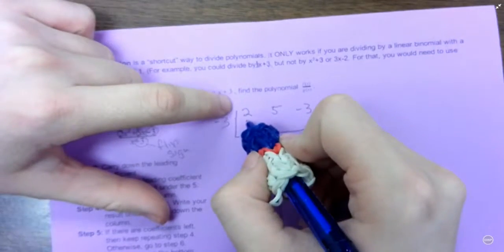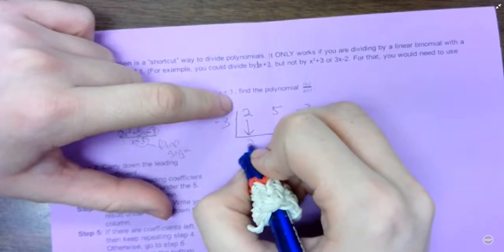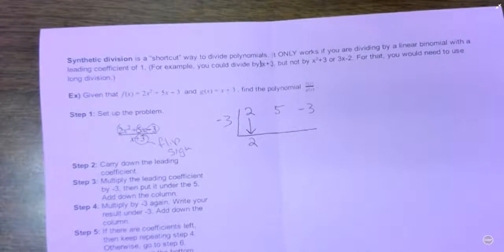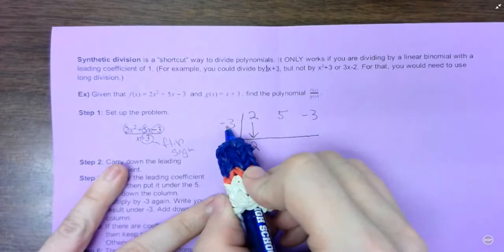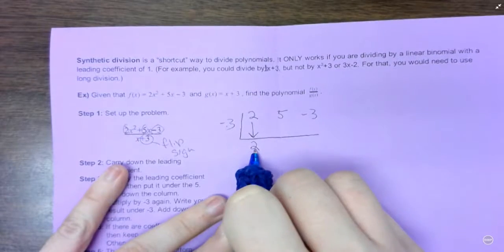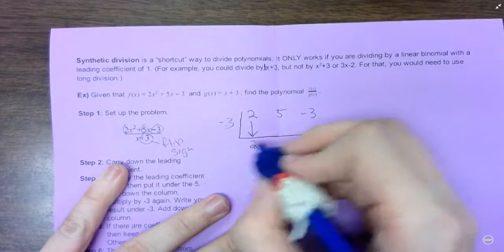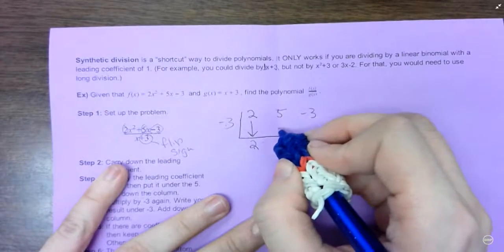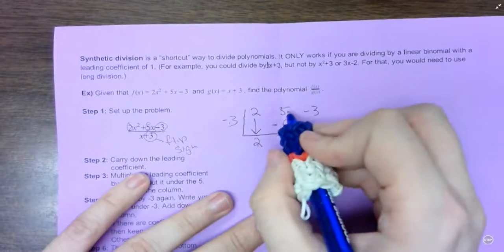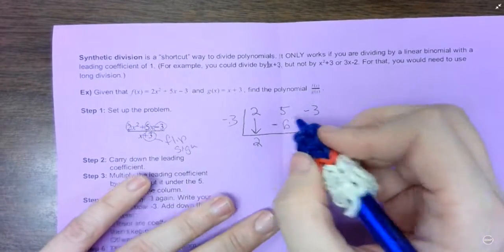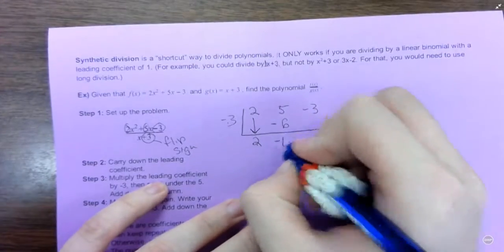So the first thing you're always going to do is bring down your leading coefficient. So bring down the 2. And then from there, it's the same steps every time. You multiply this times whatever you just brought down. So negative 3 times 2 is negative 6. And then whatever you get there, you put it right here. And then you add that down the column. So 5 plus negative 6, or 5 minus 6, if you prefer to think of it that way, is negative 1.